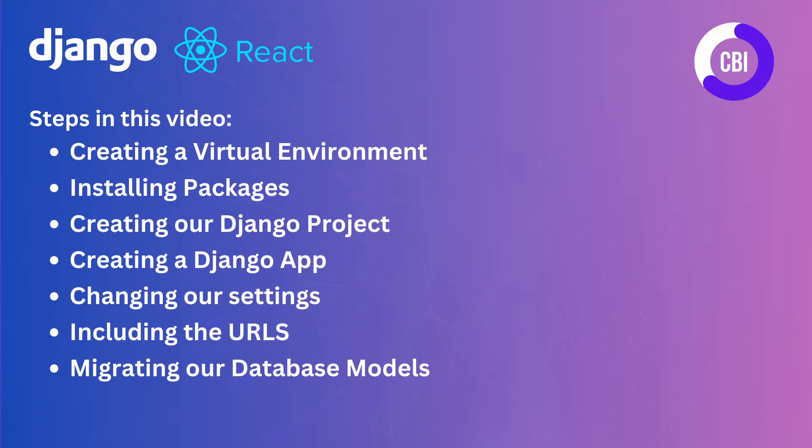In this first video, we're going to be focusing on setting up our Django backend, and we're going to be doing that by following seven steps. We're going to start by creating a virtual environment, which is going to store all of the packages that we're using during development. Next, we're going to be installing some packages that we will need to create our backend, and we will be creating our Django project and a Django app. Then we need to make some changes to our Python Django settings file and also include some of the URLs from our newly created app. And as a last step, we will migrate our database models, which will complete the setup of our backend.